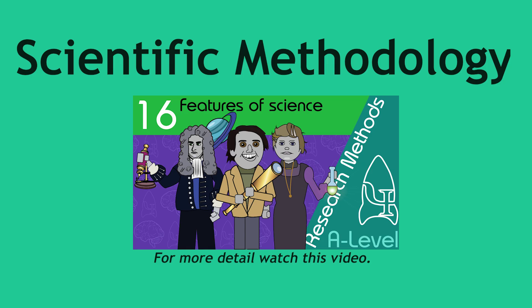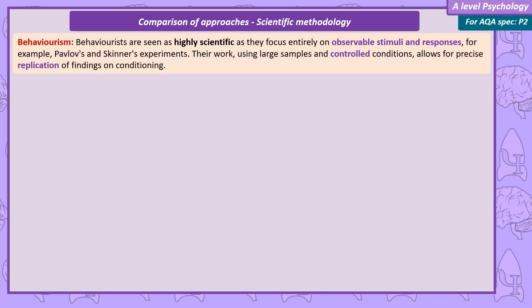Scientific methodology. Behaviourists are seen as highly scientific, only researching directly observable stimuli-response mechanisms. Their research, including Pavlov's studies on dogs and Skinner's studies on rats, uses large samples, standardised procedures, and highly controlled conditions. This focus on the scientific method has allowed other researchers to exactly replicate their findings on conditioning.